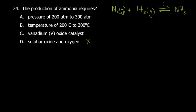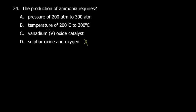Sulfur oxide and oxygen are not the reactants here. Vanadium pentoxide (V₂O₅) is the catalyst used in the production of sulfuric acid — converting sulfur dioxide to sulfur trioxide — not for ammonia production. In the Haber process for ammonia, we use iron as the catalyst.